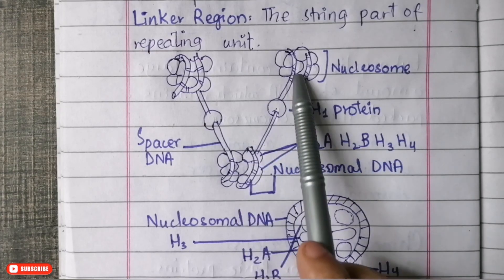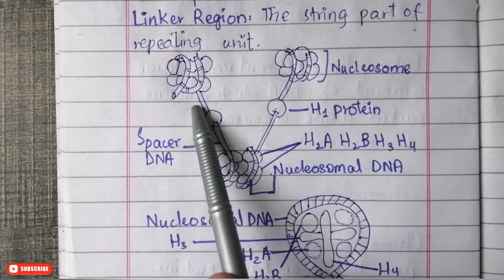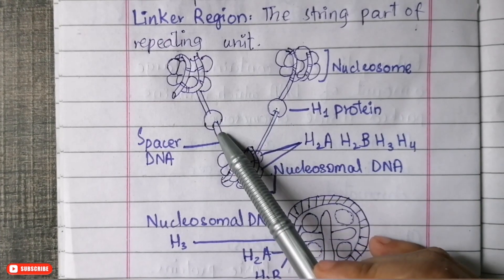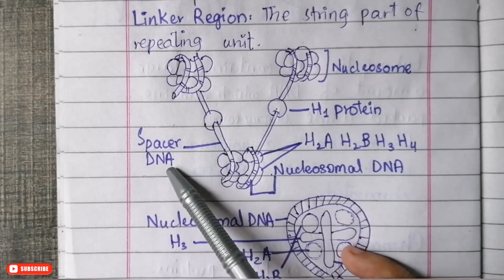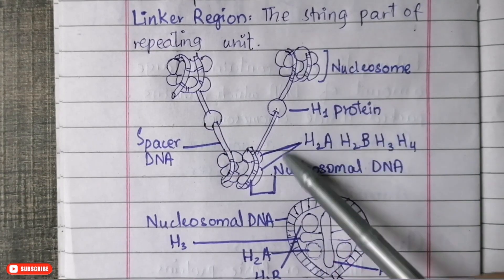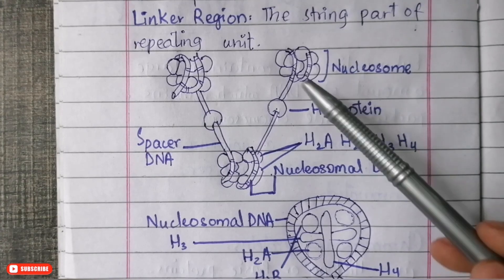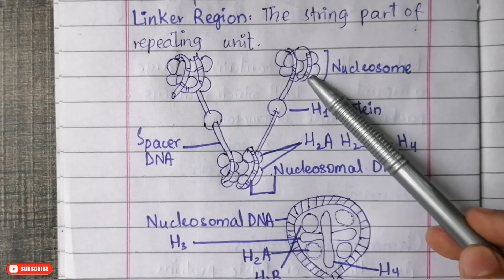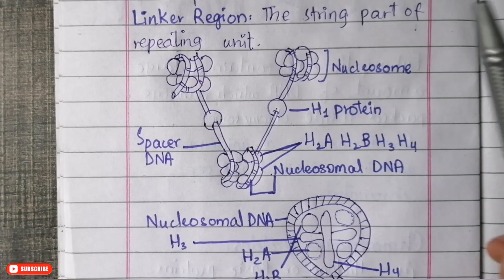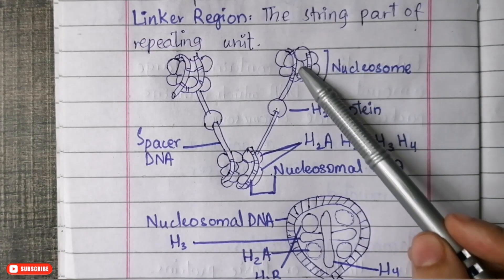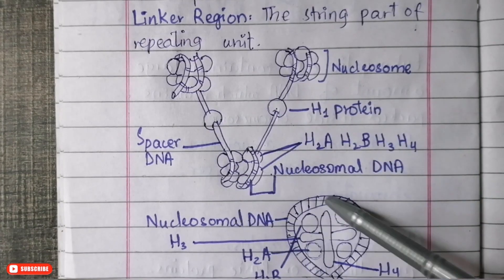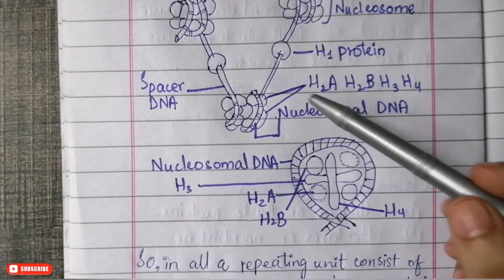These nucleosomes are connected together through a string — this long thread-like structure — which is known as the spacer DNA or linker region. This is how the whole structure of the chromatid looks: the DNA enclosed with the most important type of proteins, connected by the spacer DNA. It looks like beads on a thread.